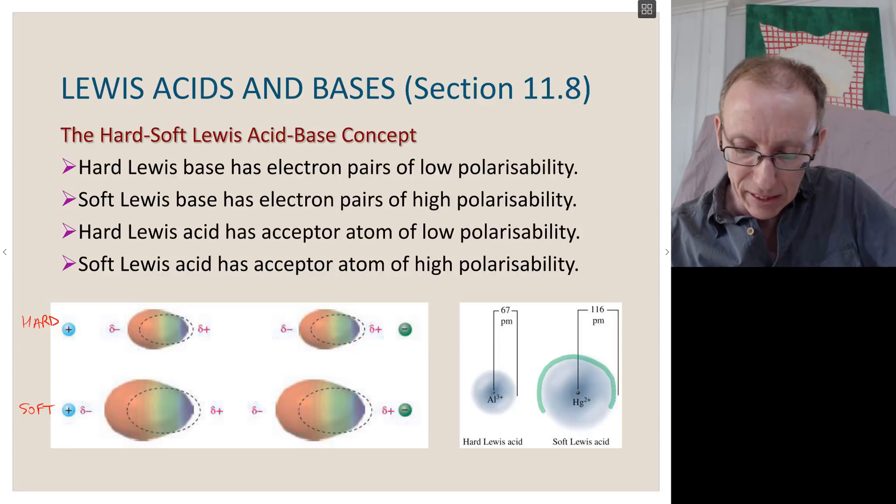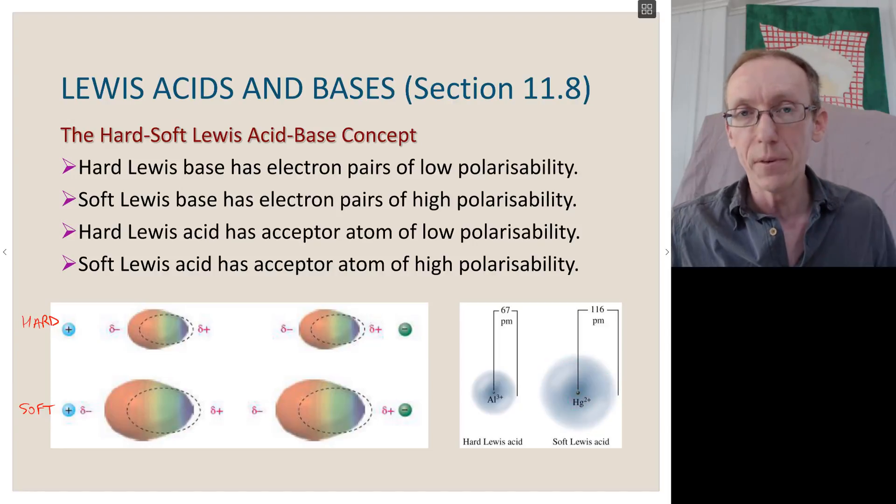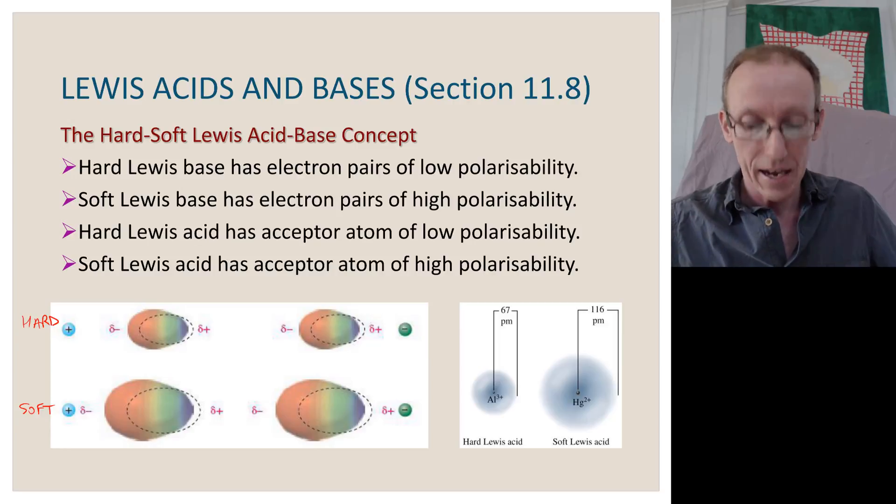Mercury 2+, on the other hand, is very large and has only a 2 positive charge. So it's a soft Lewis acid. And it's going to be very good at polarizing electron clouds of other species nearby, particularly if they happen to also be soft Lewis bases. So we form very strong bonds with soft Lewis bases.